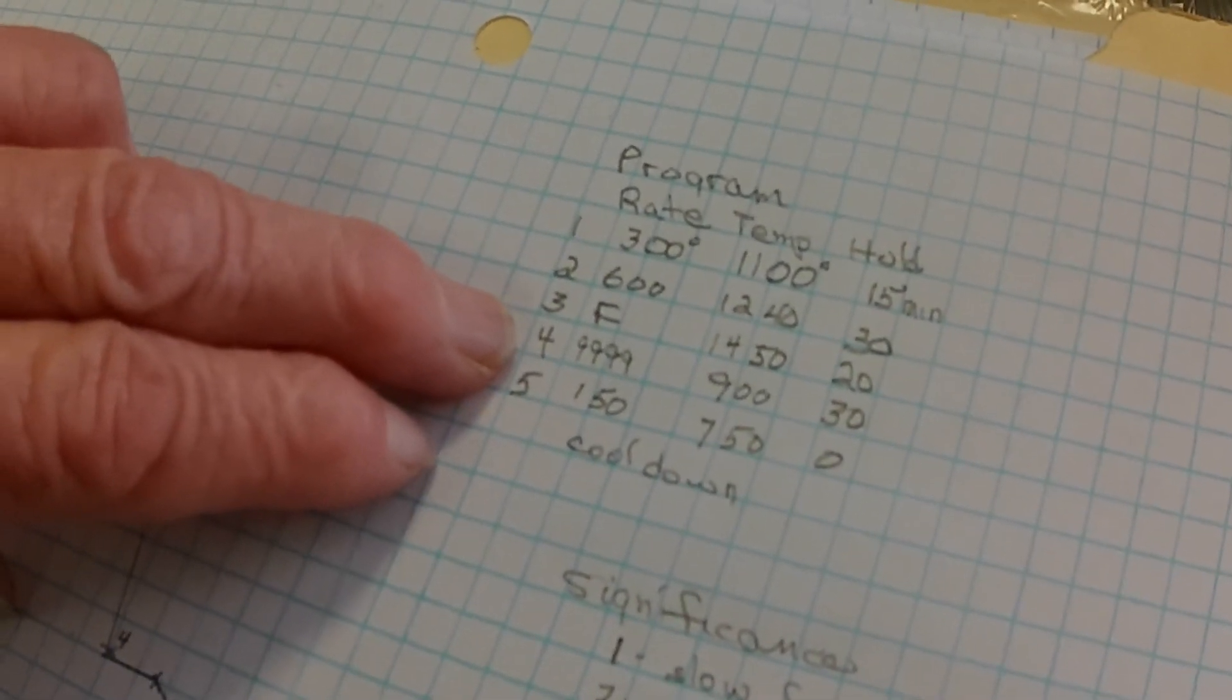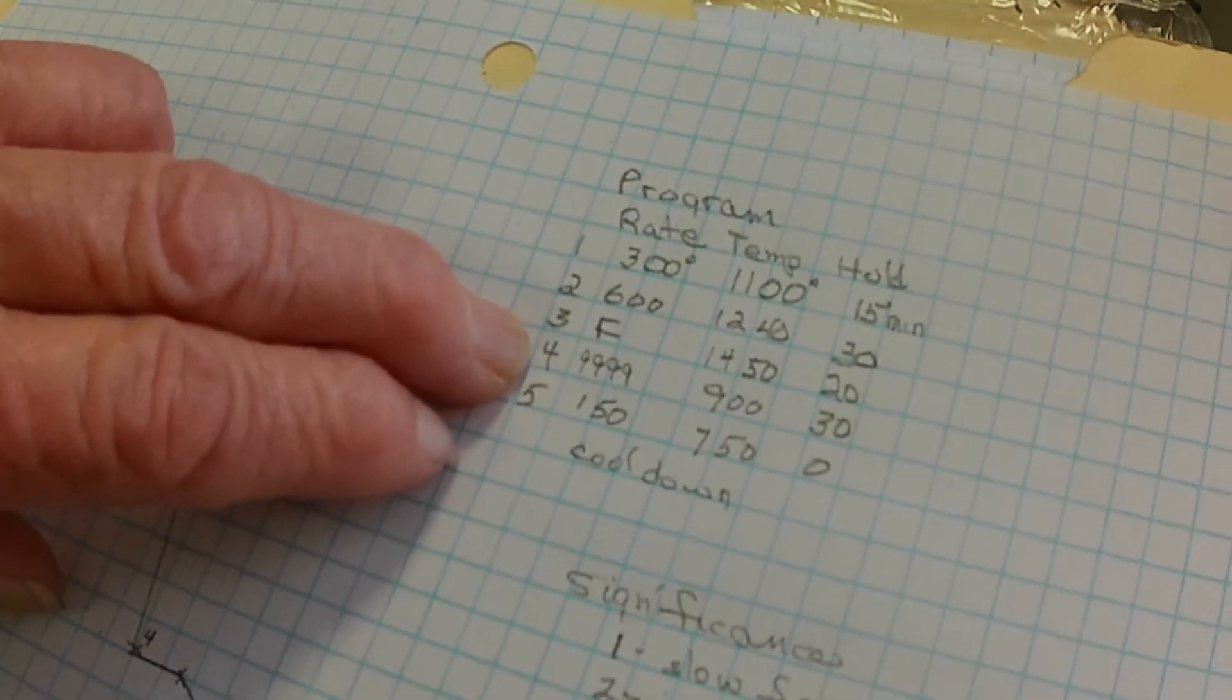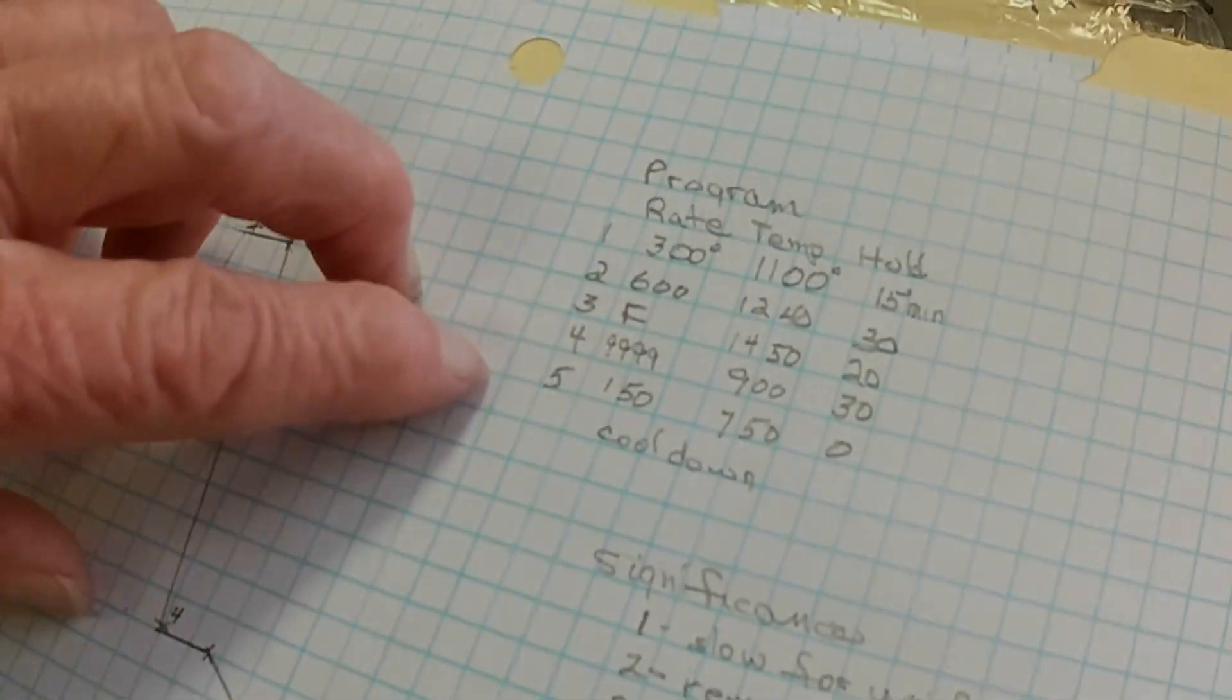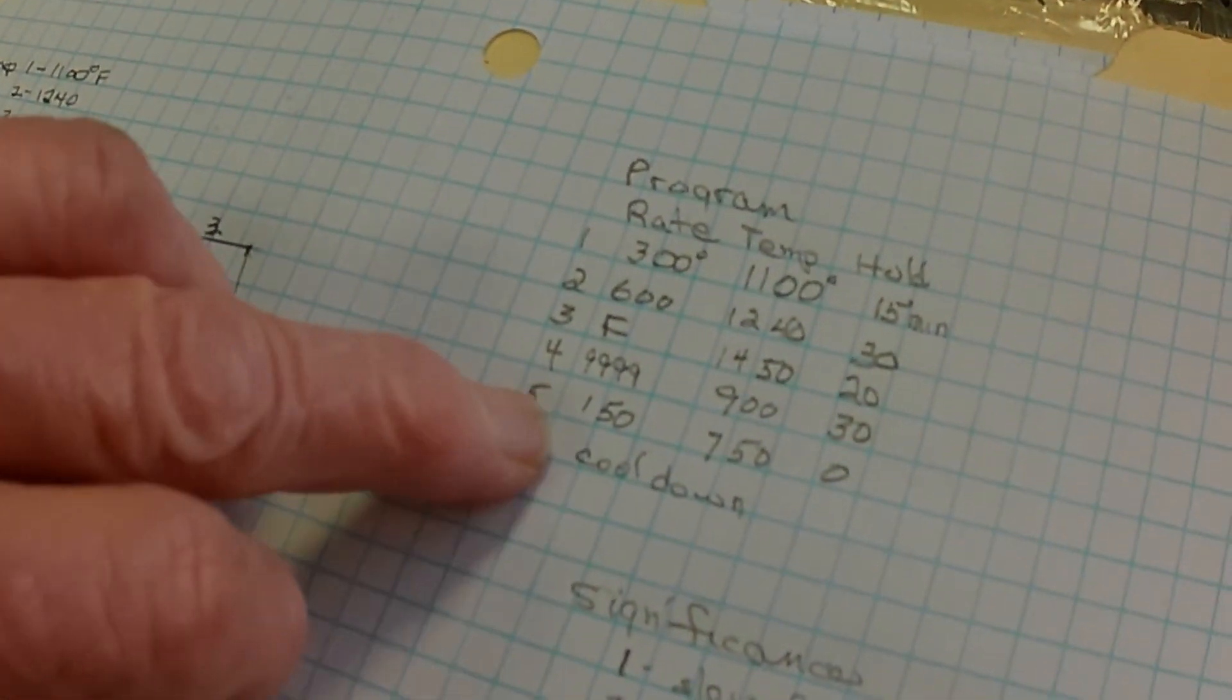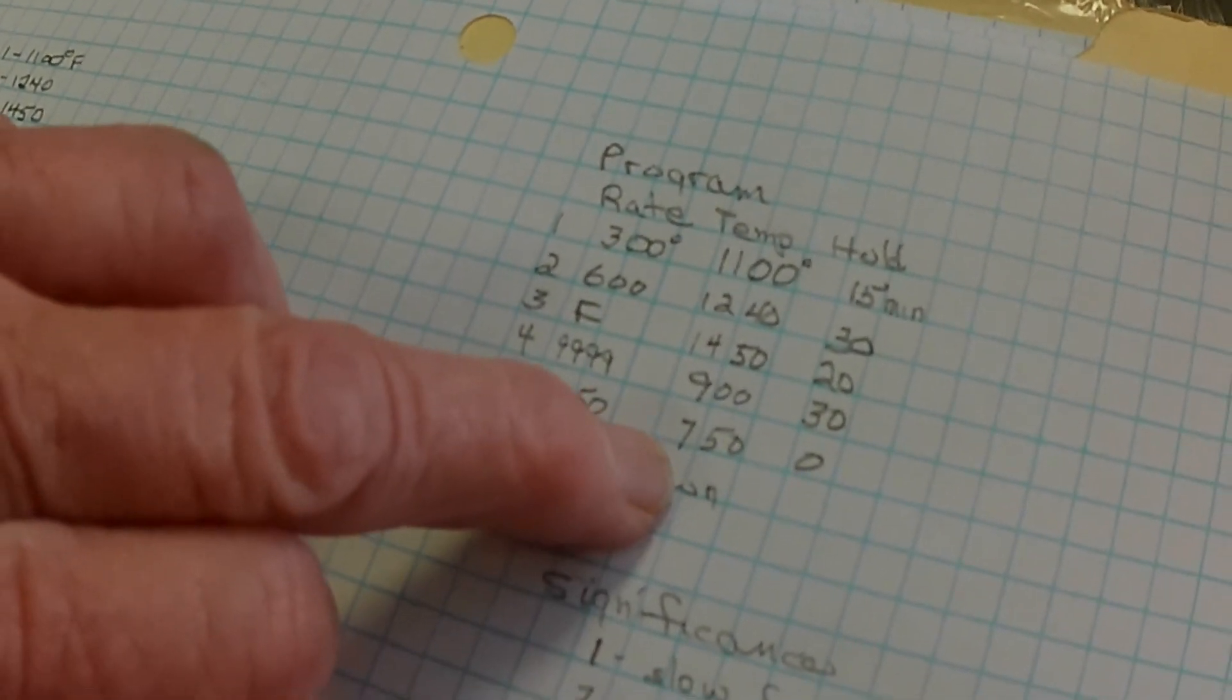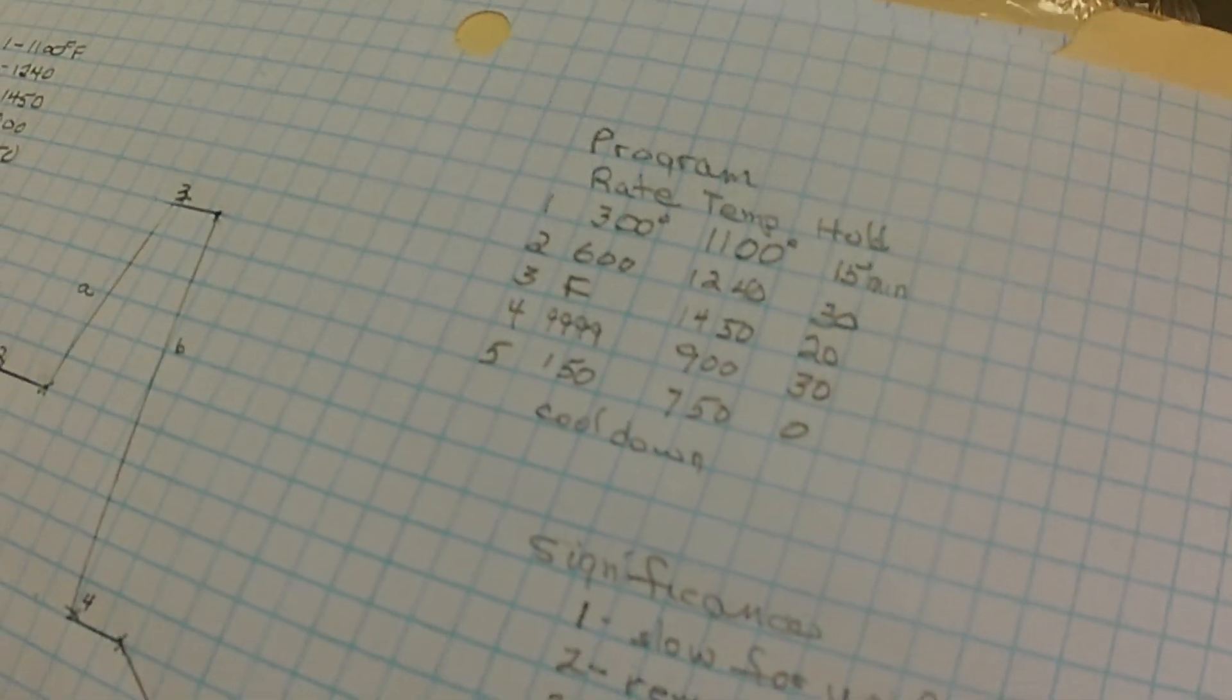Now it's time to cool. We cool it full, 9999, to 900 and hold it for 30 minutes. The last step is the rate of 150 degrees per hour going to 750 and then the kiln turns off and we have to wait for it to cool.